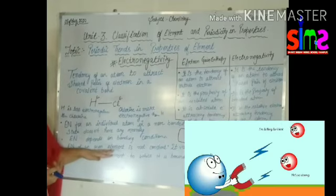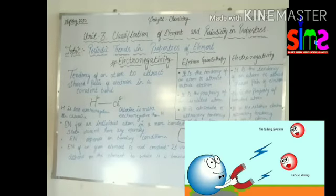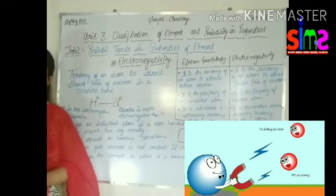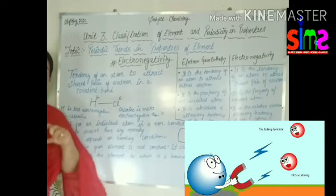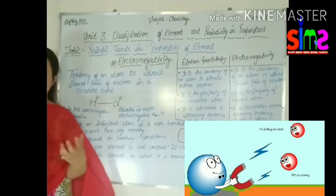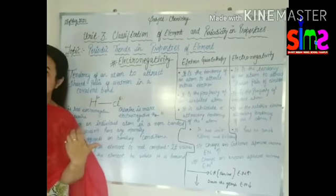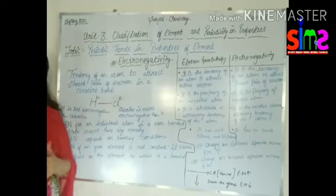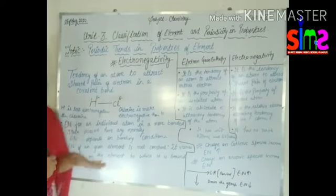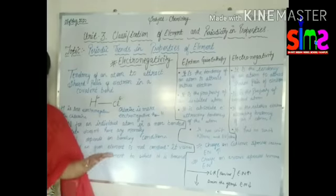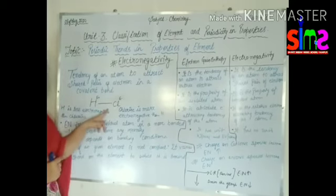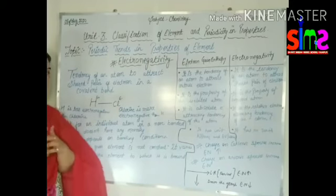Electronegativity of an element is not constant. It varies depending on the element to which it is bonded. If chlorine is bonded with hydrogen, the electronegativity is different. So electronegativity depends on which atom is bonded. And the most important thing is that a non-bonded atom has no electronegativity.